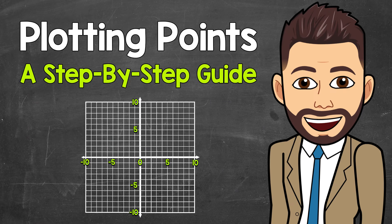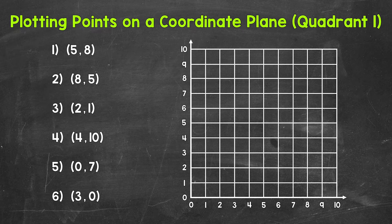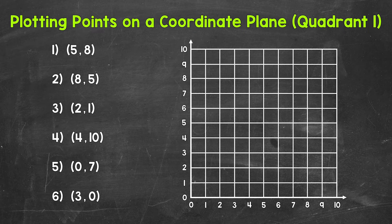Welcome to Math with Mr. J. In this video, I'm going to cover plotting points on a coordinate plane. We will start by just taking a look at quadrant 1, so we will only be working with positives. Then we will move on to plotting points within all four quadrants, so we will be working with both positives and negatives. Let's start by labeling the x and y-axis.